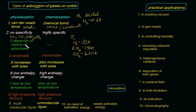Under chemisorption, specificity is already mentioned — it is highly specific. What decides physisorption is the nature of the adsorbate. The next difference is reversibility: physisorption is reversible and the process can be reversed. But chemisorption is irreversible. Once adsorbed, it is permanent and not reversible.